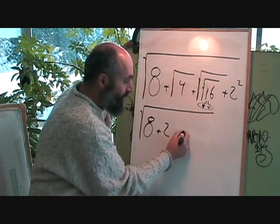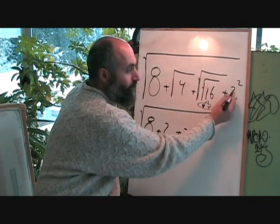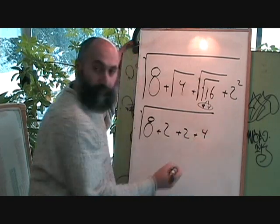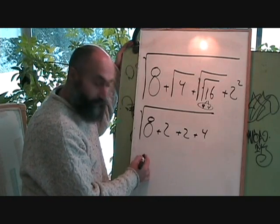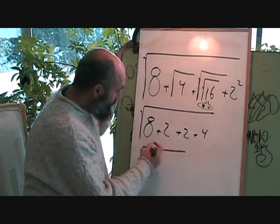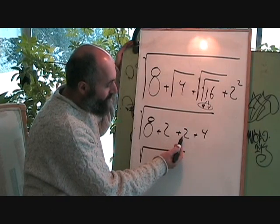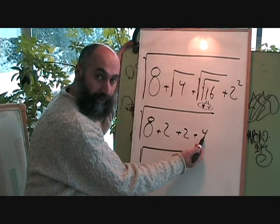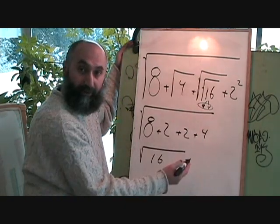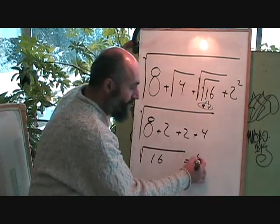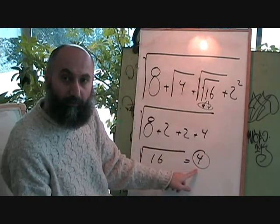So that becomes plus 2. And 2 squared is 4. Now combining everything: 8 plus 2 is 10, plus 2 is 12, plus 4 is 16. So we get the square root of 16. We already did that — the square root of 16 is just 4. So this whole thing turns into 4.